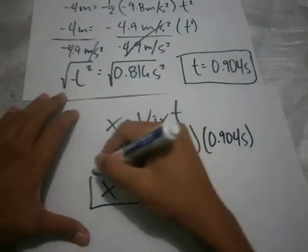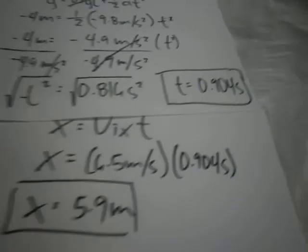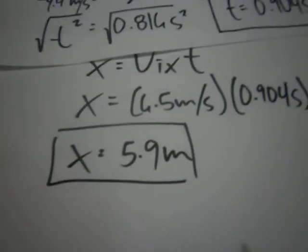So this is our x. Therefore, t equals 0.904 seconds and x equals 5.9 meters.